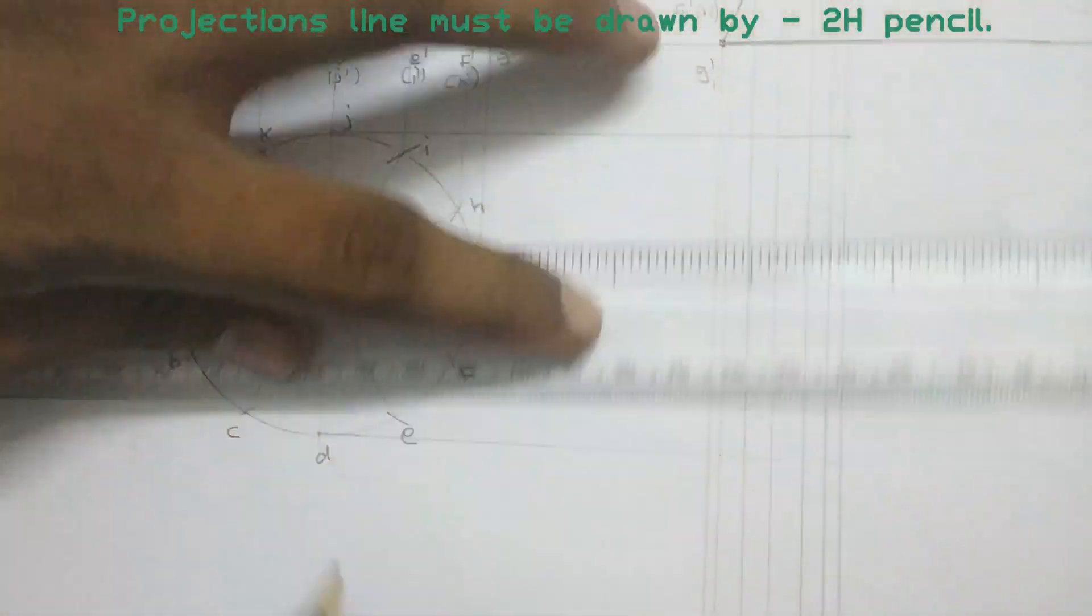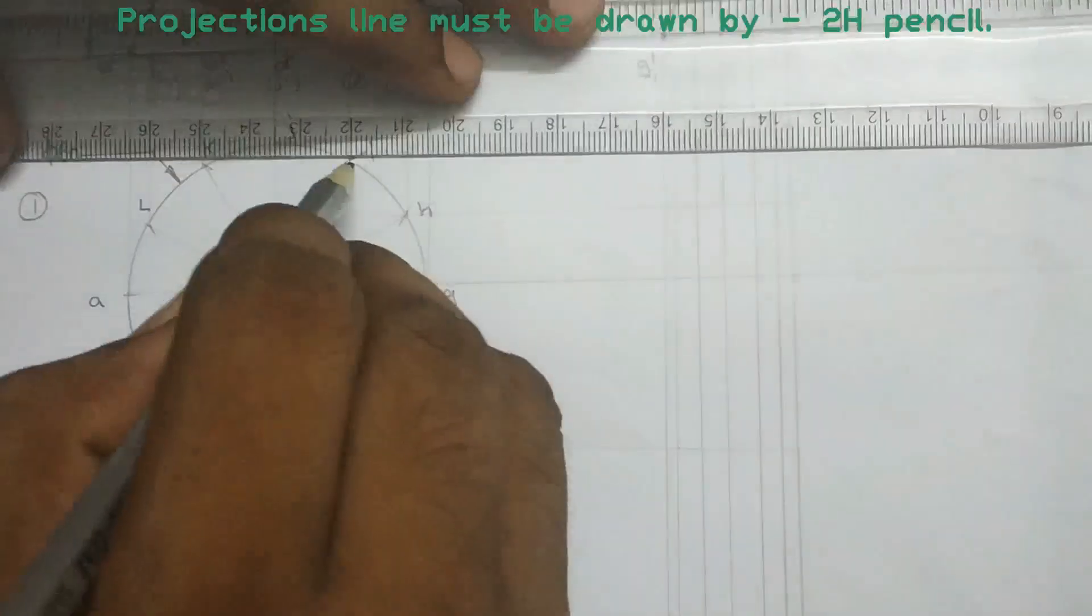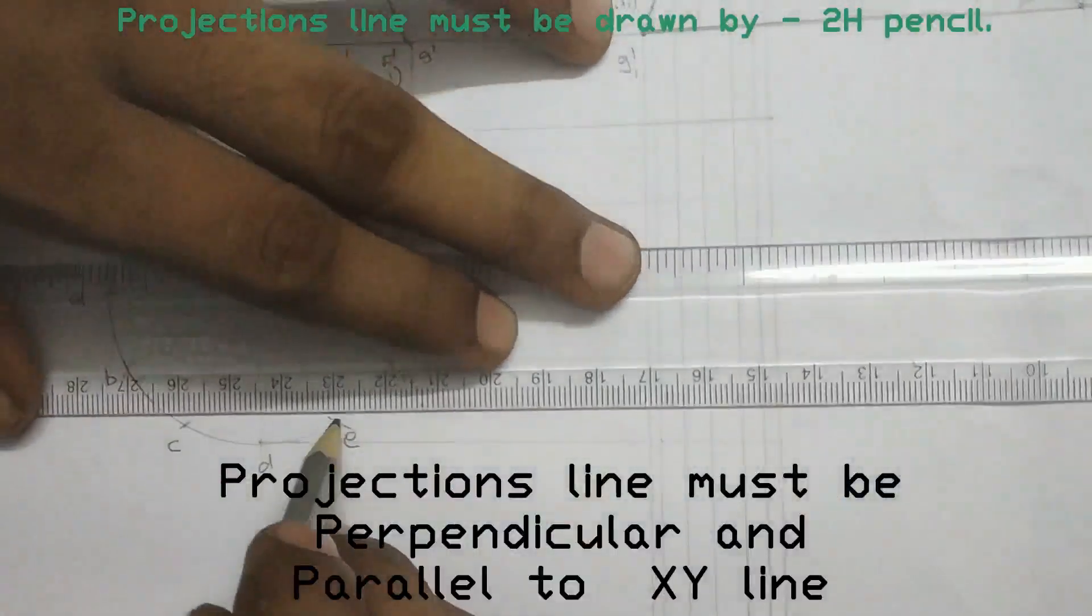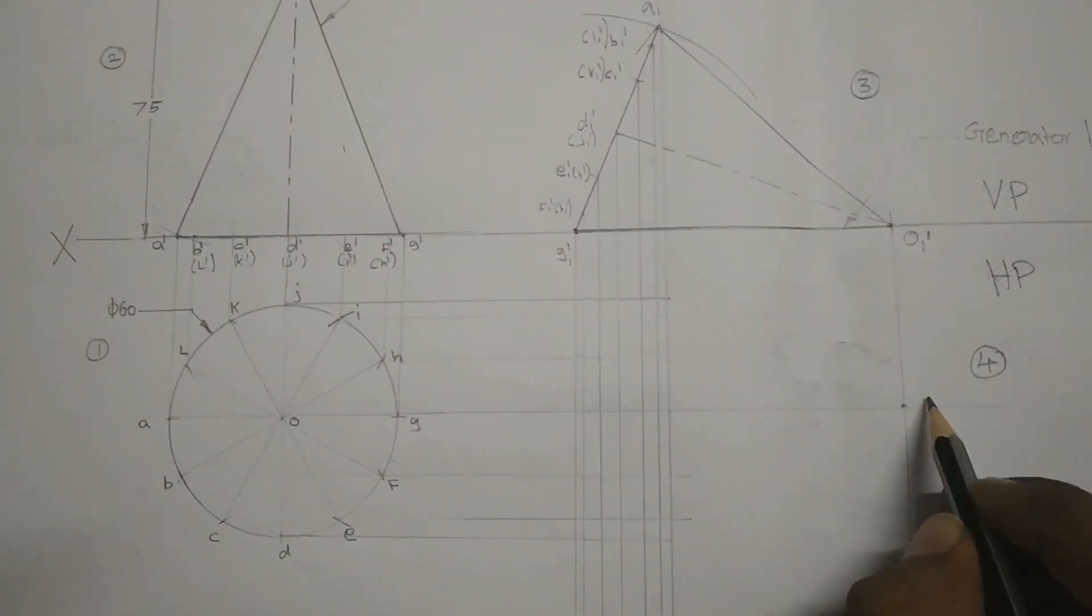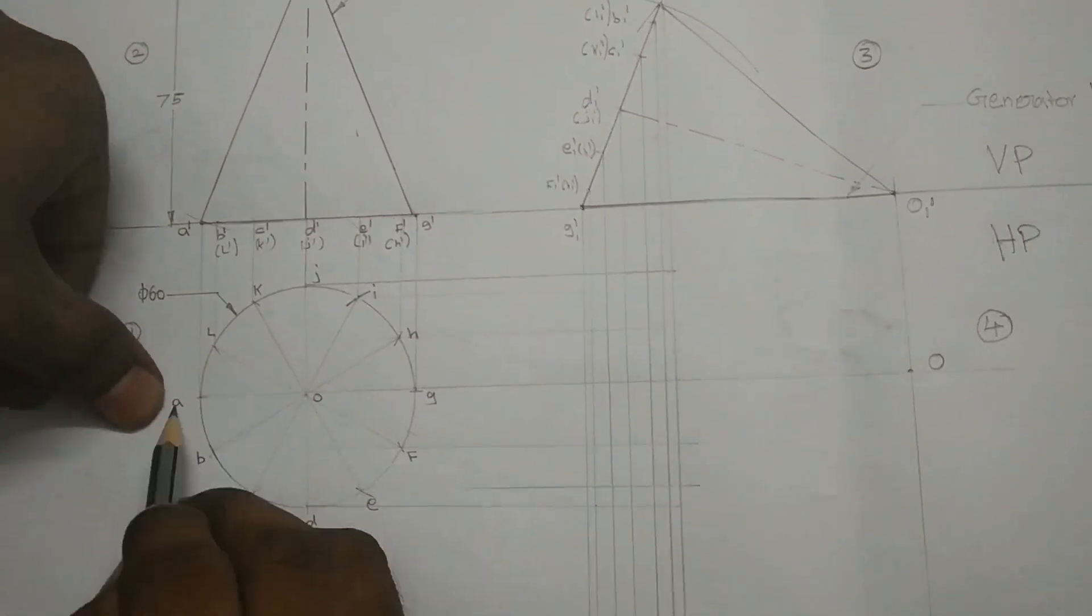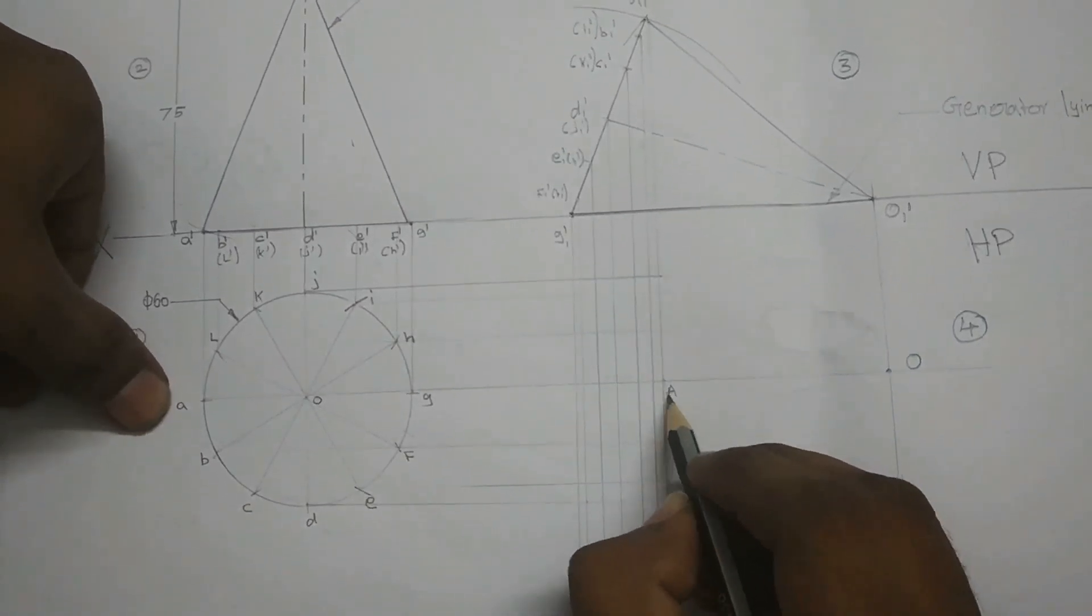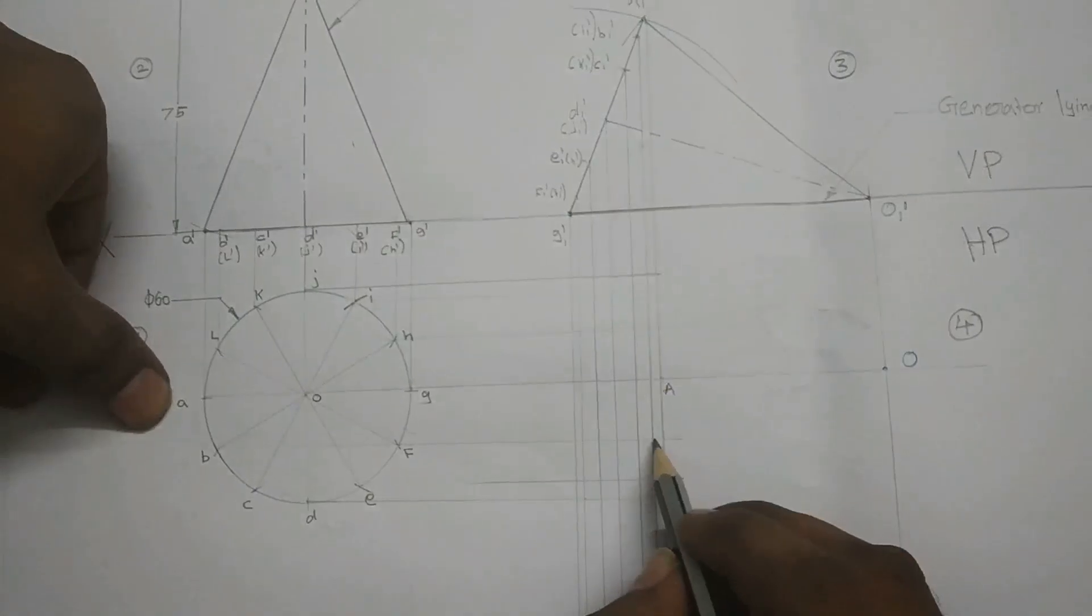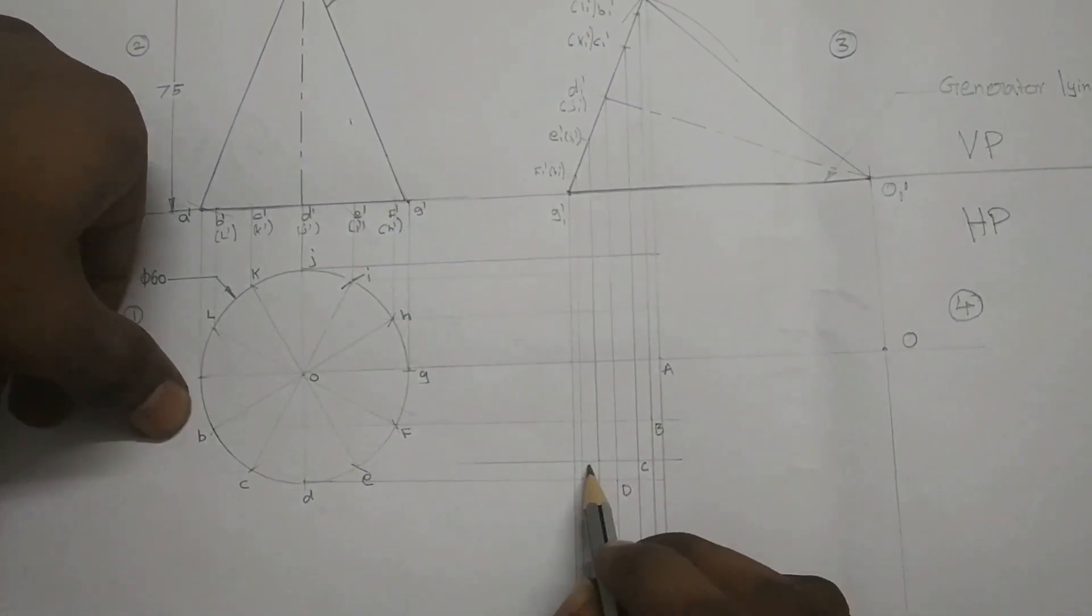From step 1 we have to draw horizontal projections line. Now identify the intersecting points, a horizontal projection and vertical projection, the intersecting point is A.